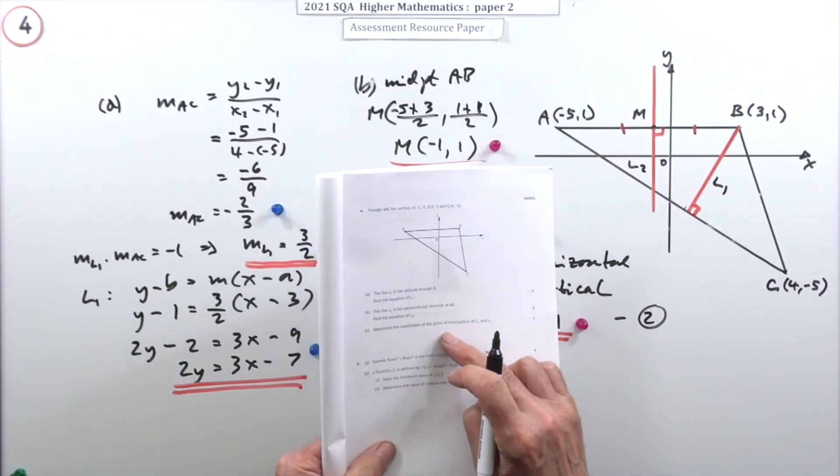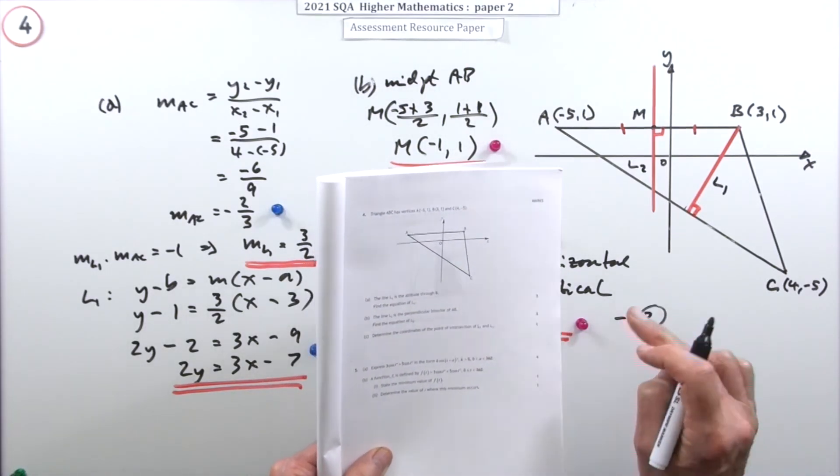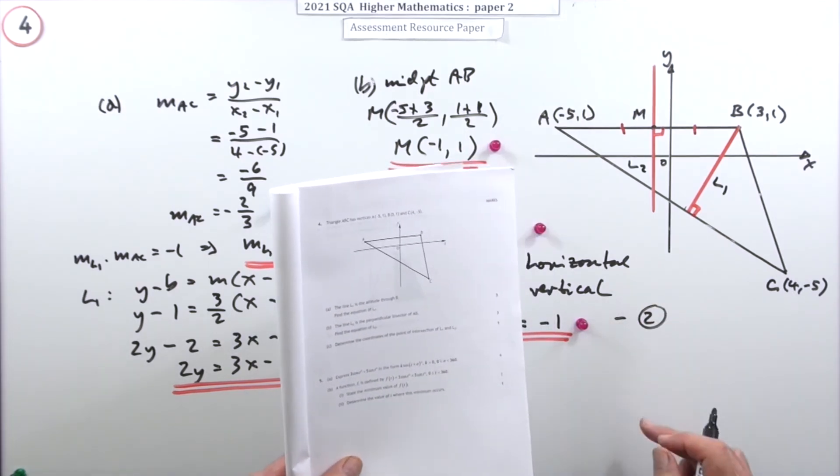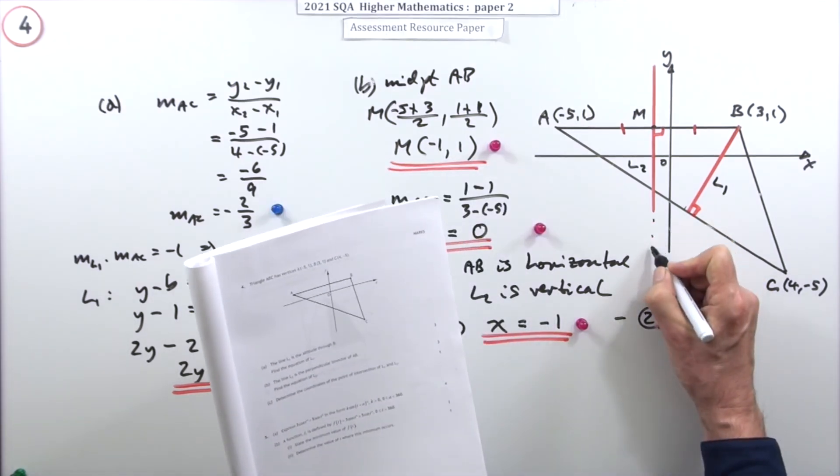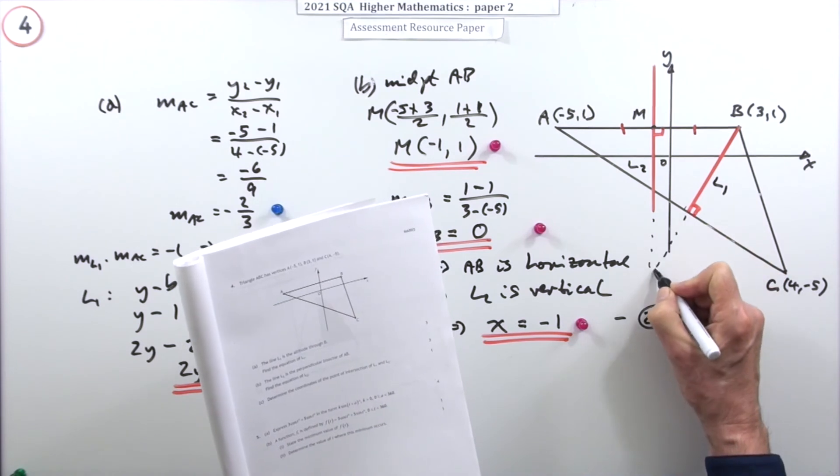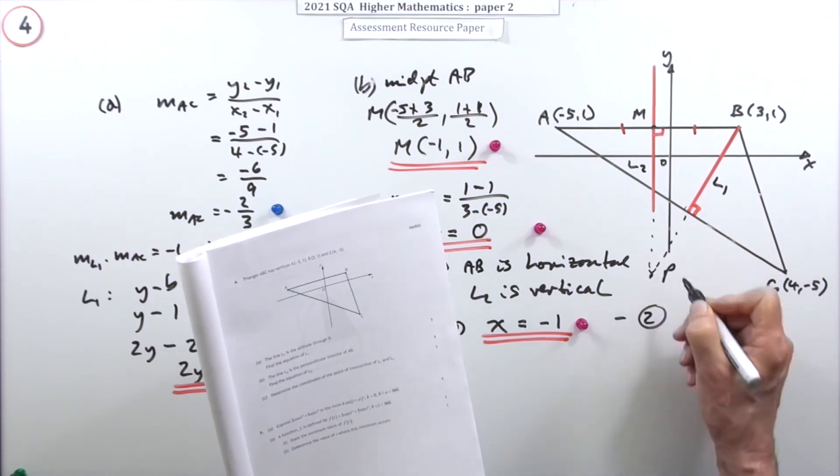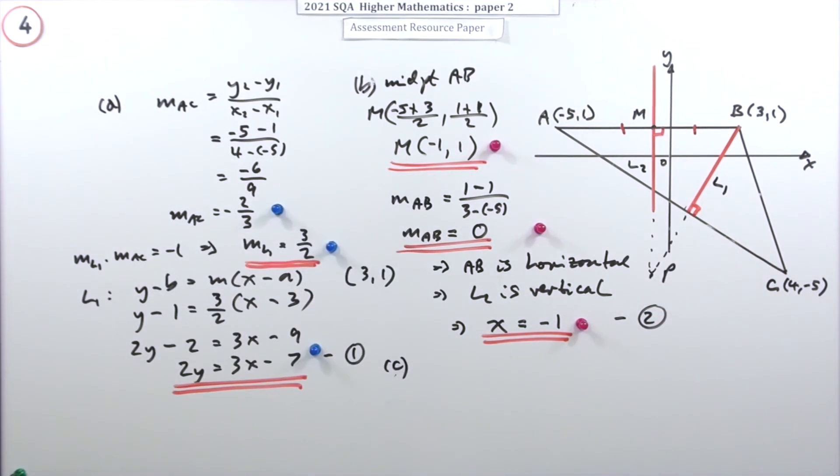Now part C says determine the coordinates of the point of intersection of L1 and L2. Now this time the point of intersection is outside of the triangle, it would be the point that those lines projected would continue to. But it's a fairly straightforward one, that's why it's only one mark, because all I'm going to do is substitute 2 in 1.